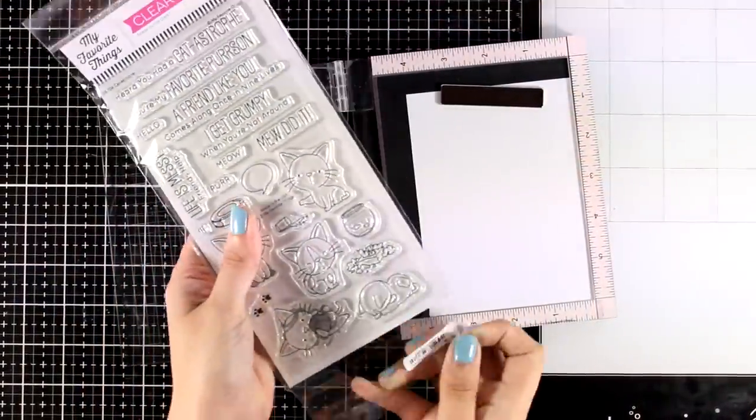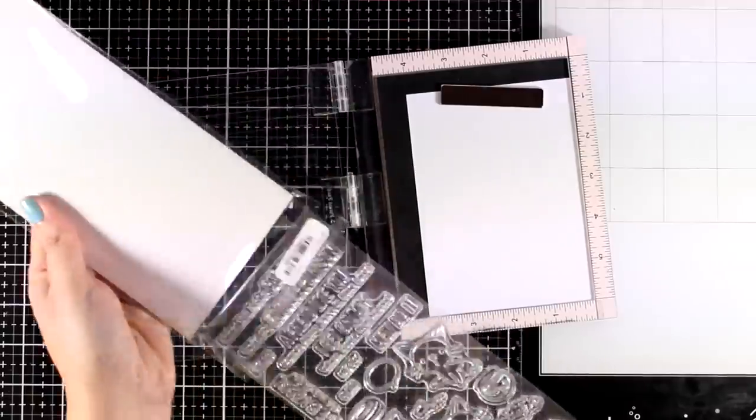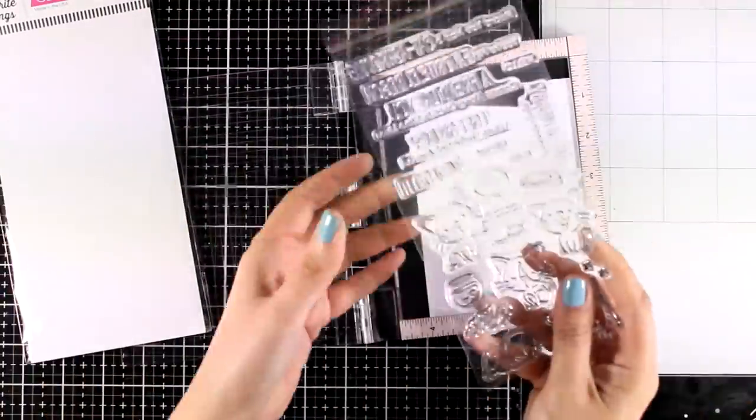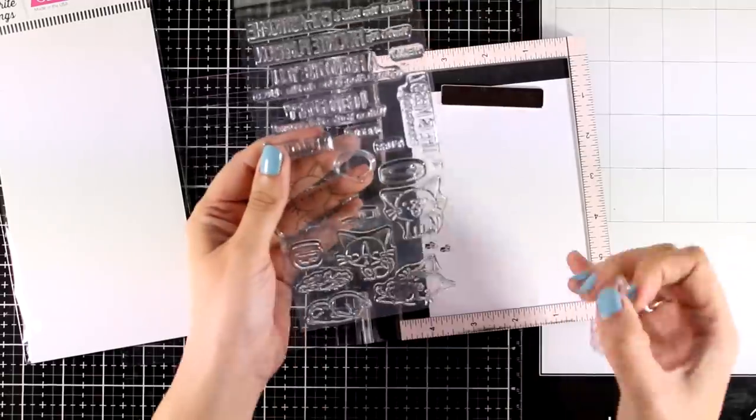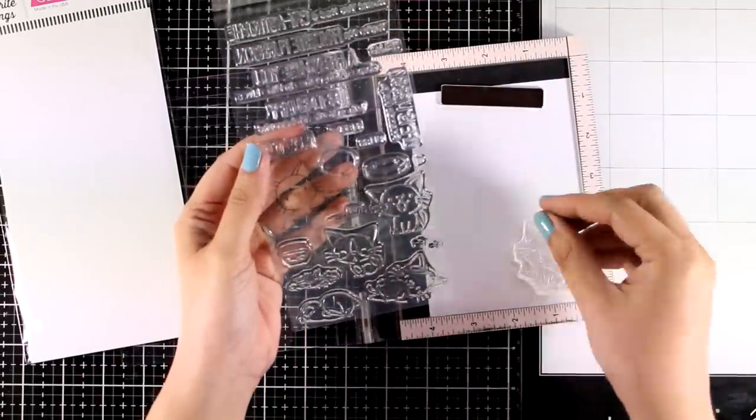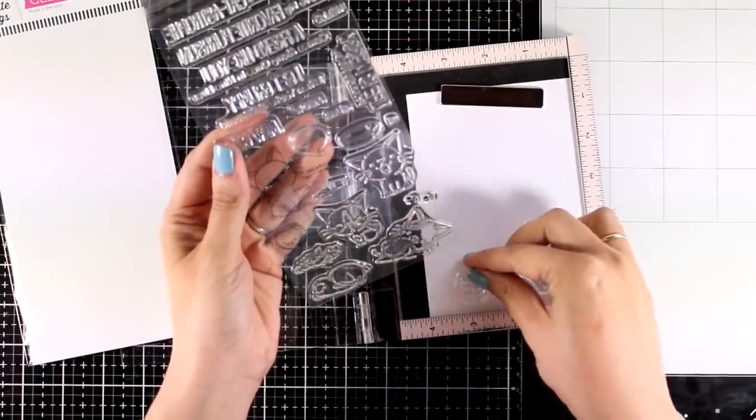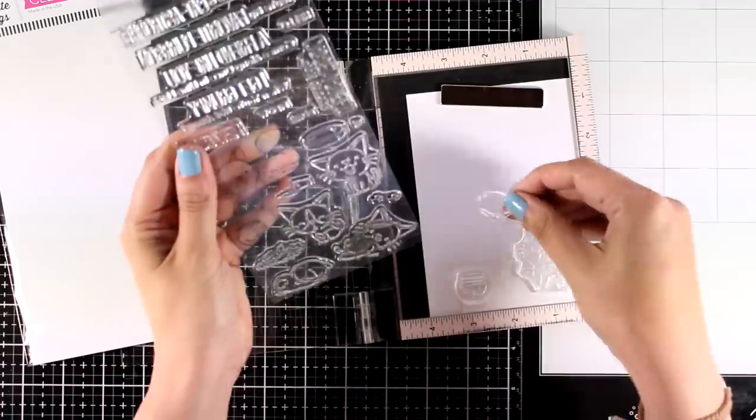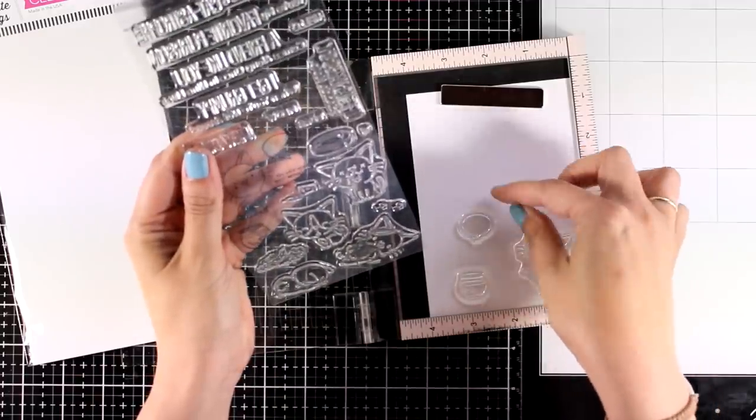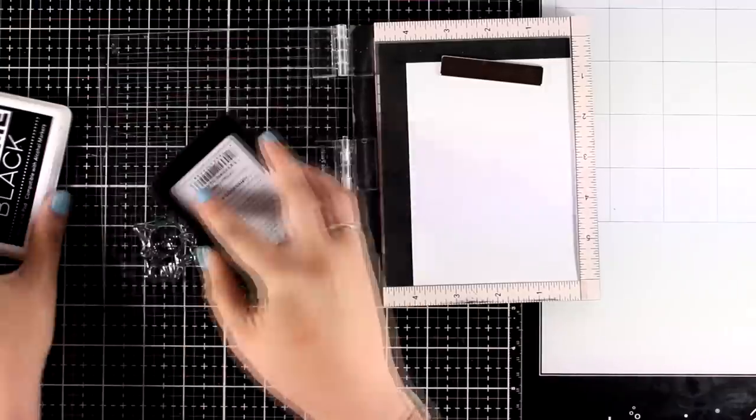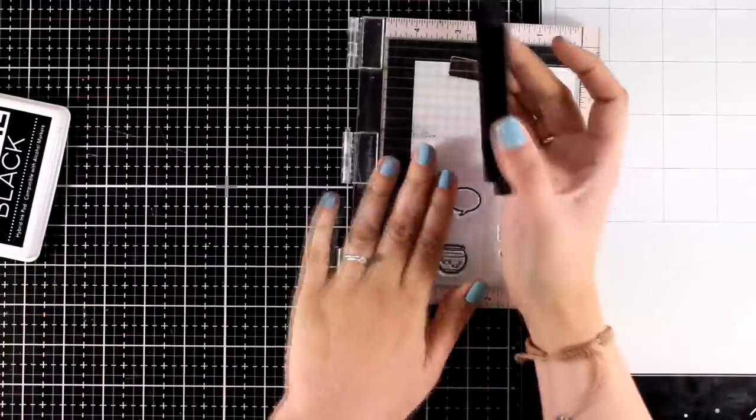And for this one I'm going to have my cat Ginger as the focal point. Now the stamps that I'm using here is called Catastrophe and it is one from the latest release by My Favorite Things. I'm going to pick one of the cats, I'm also going to stamp a speech balloon and also the fish bowl. So I'm going to create a little scene where Ginger is making a mess. I'm stamping everything with Extreme Black ink pad just because it is alcohol friendly and I will use my alcohol markers again to color everything.